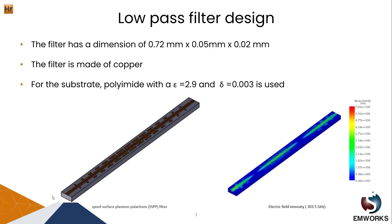For the low pass filter, a spoof surface plasmon polariton, or SSP, filter is used. The filter is physically small and made of copper. The substrate used is polyimide with a dielectric constant of 2.9 and a loss tangent of 0.003. On the bottom left we have a 3D picture of the filter, and on the right we have an image of the electric field intensity.